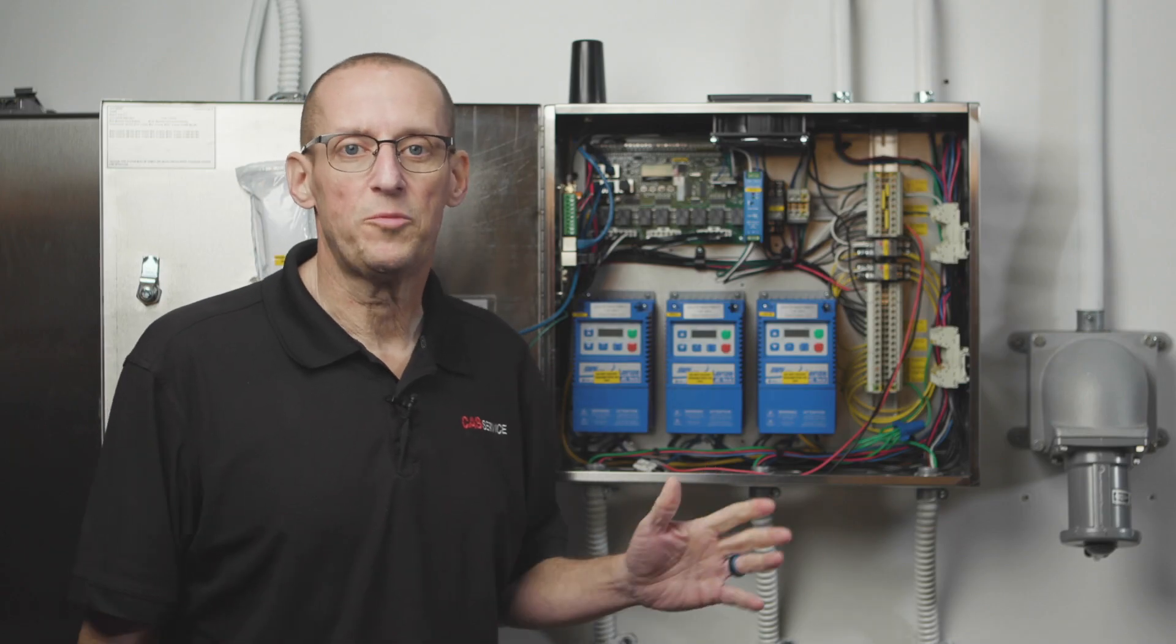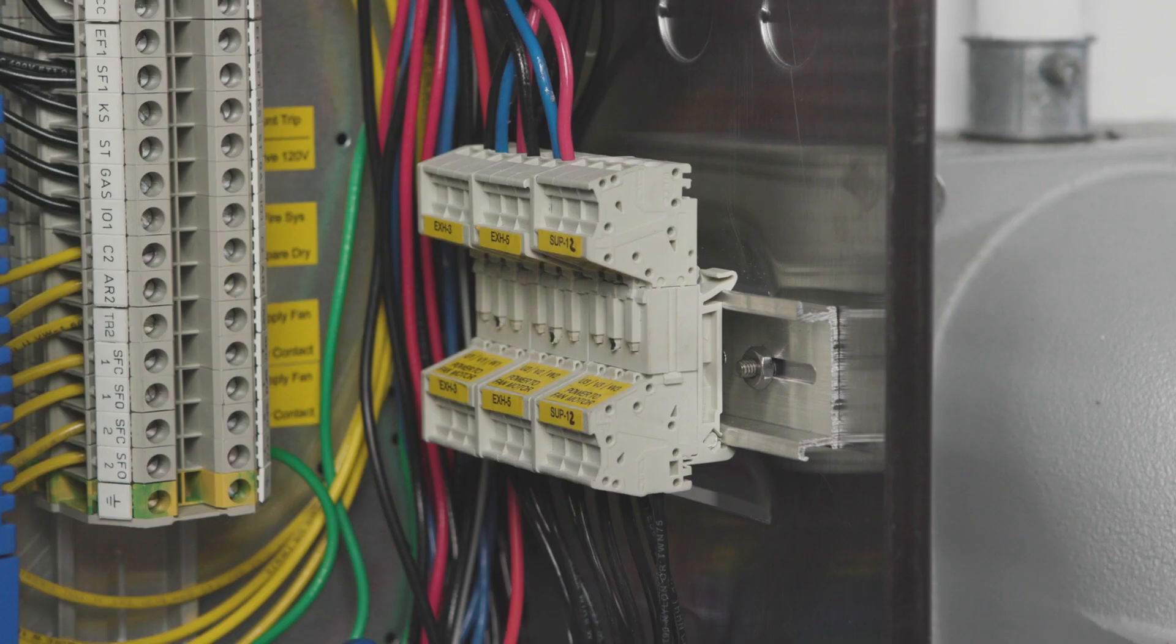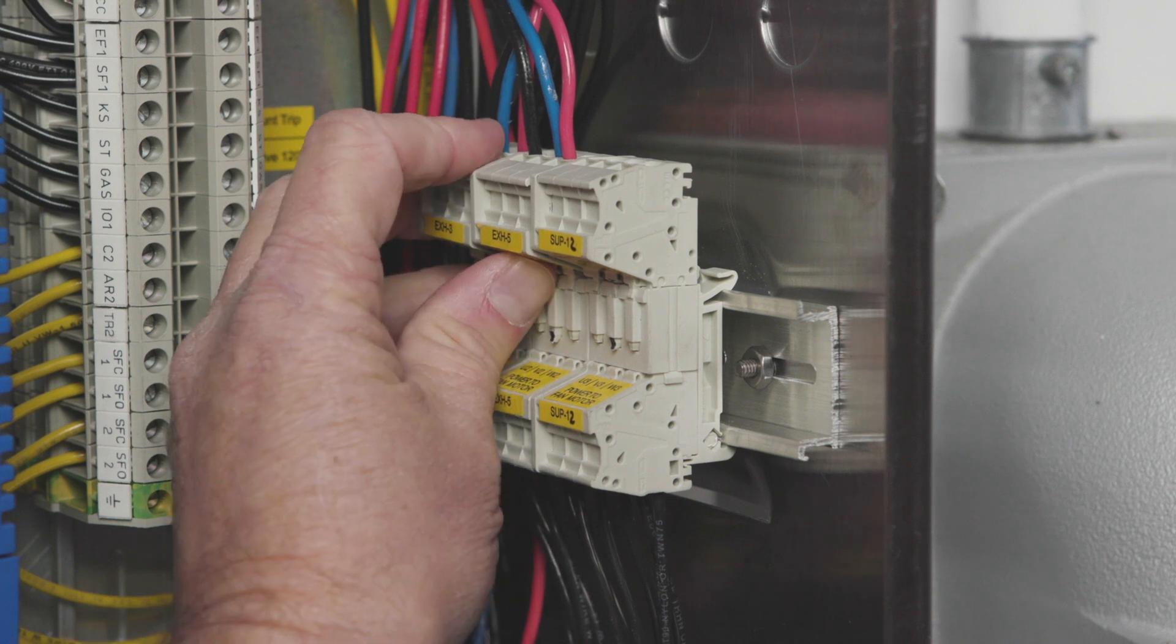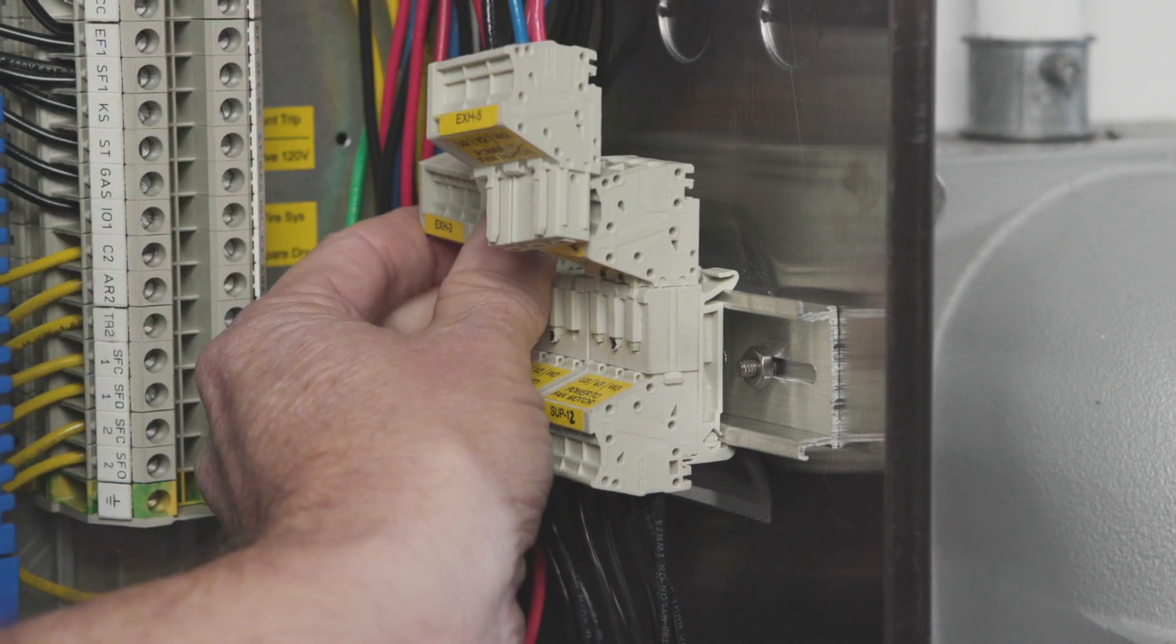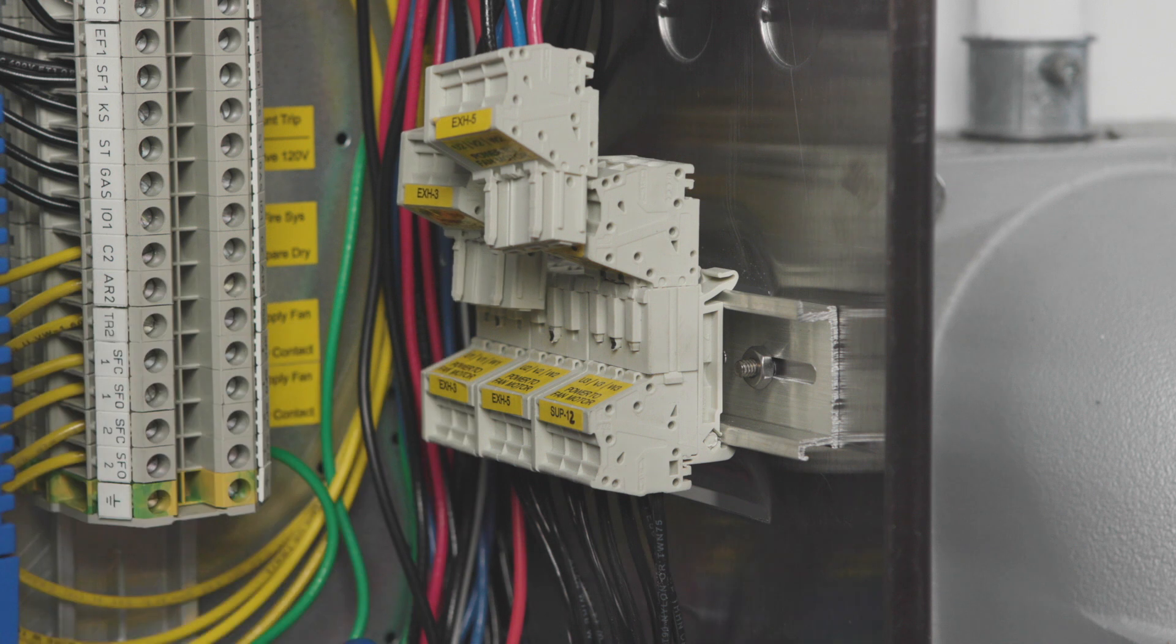So first, if your control package has VFDs, what you want to do is we want to unplug these quick disconnects here. This is the load power from the VFD to the fan. What this does is it protects the VFD should you get it miswired.